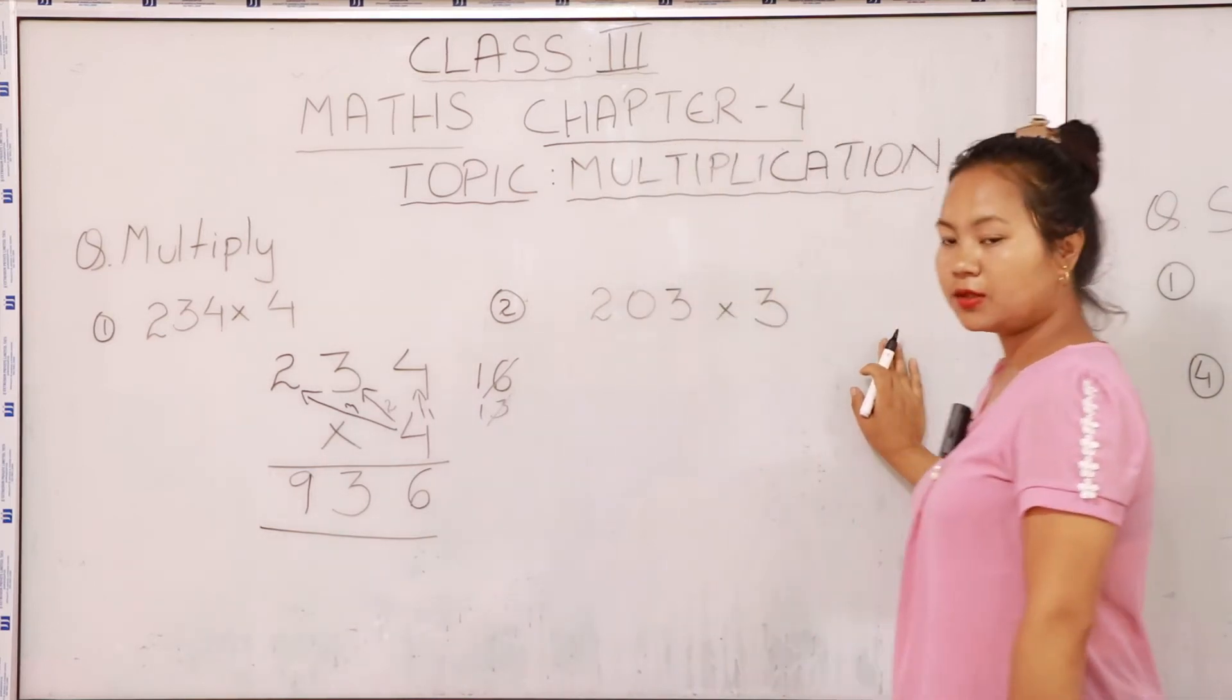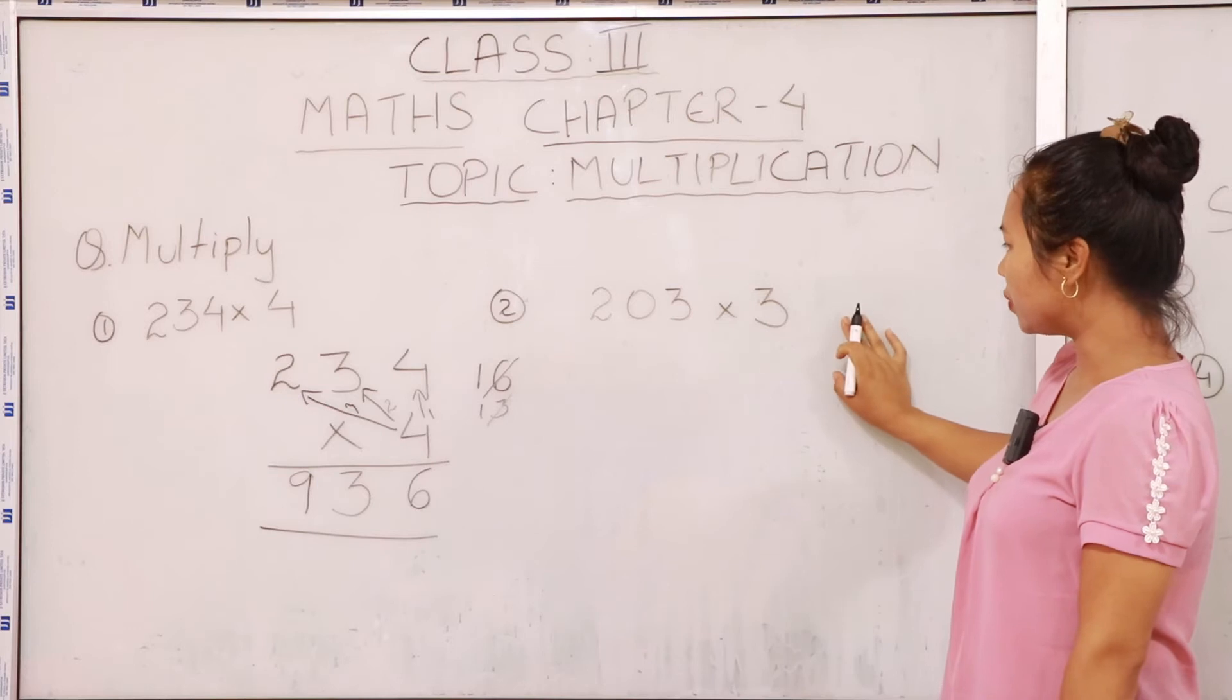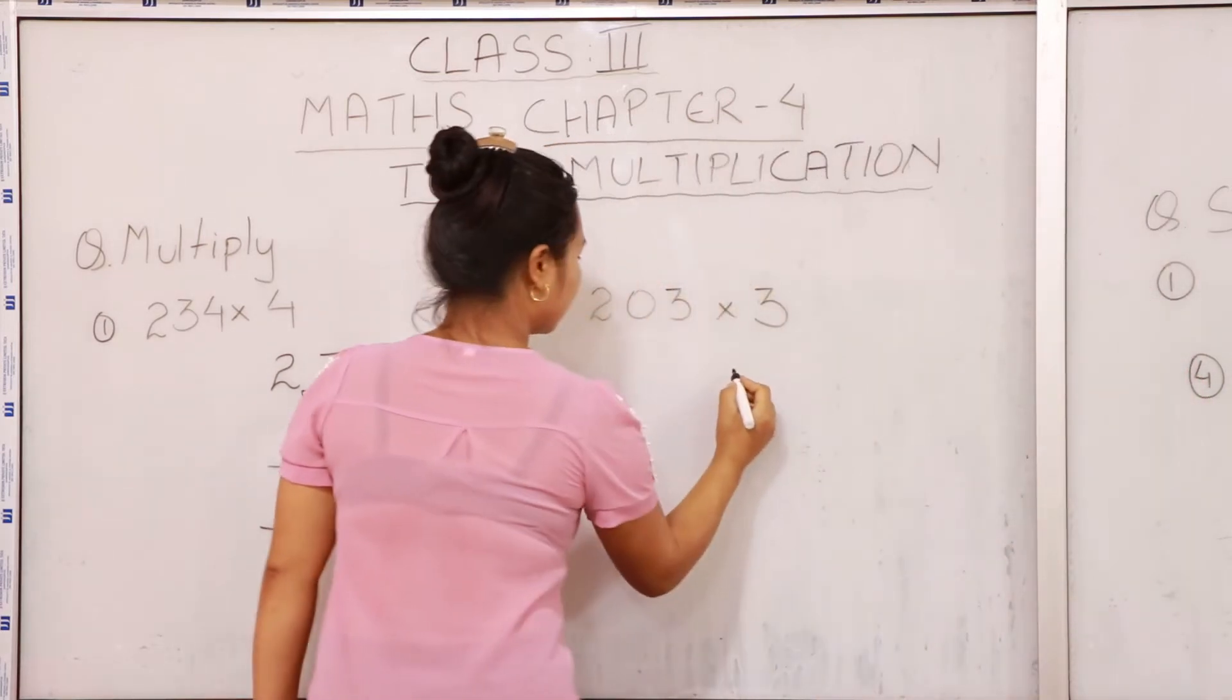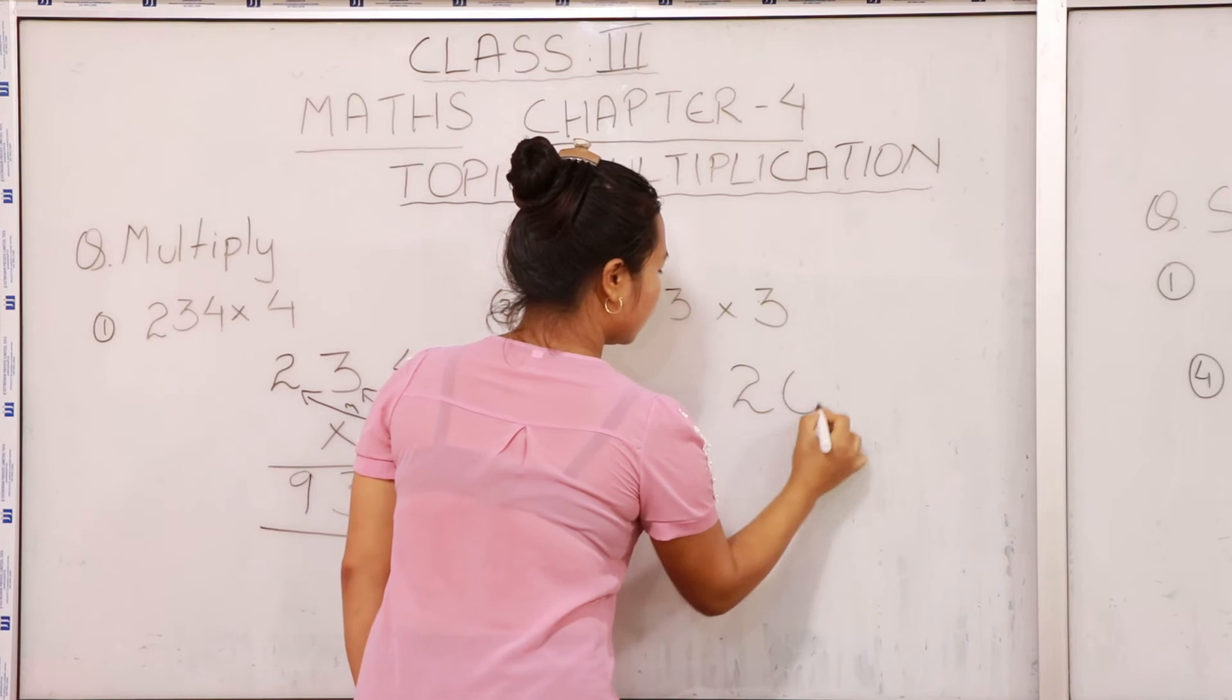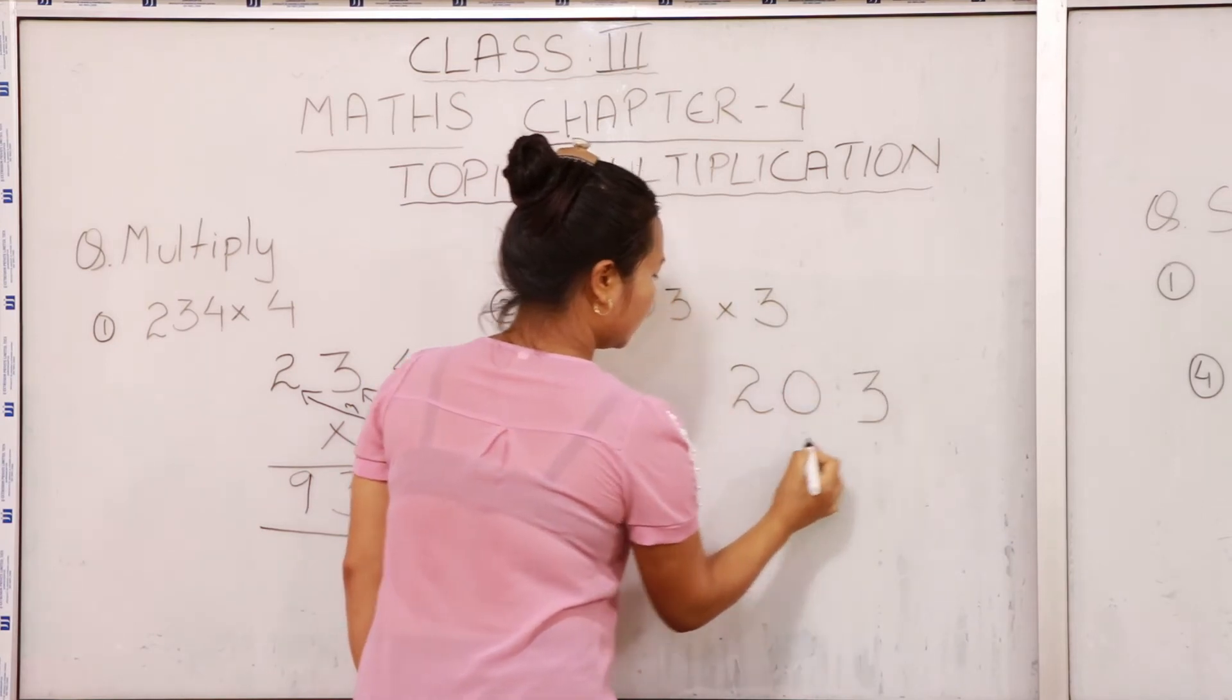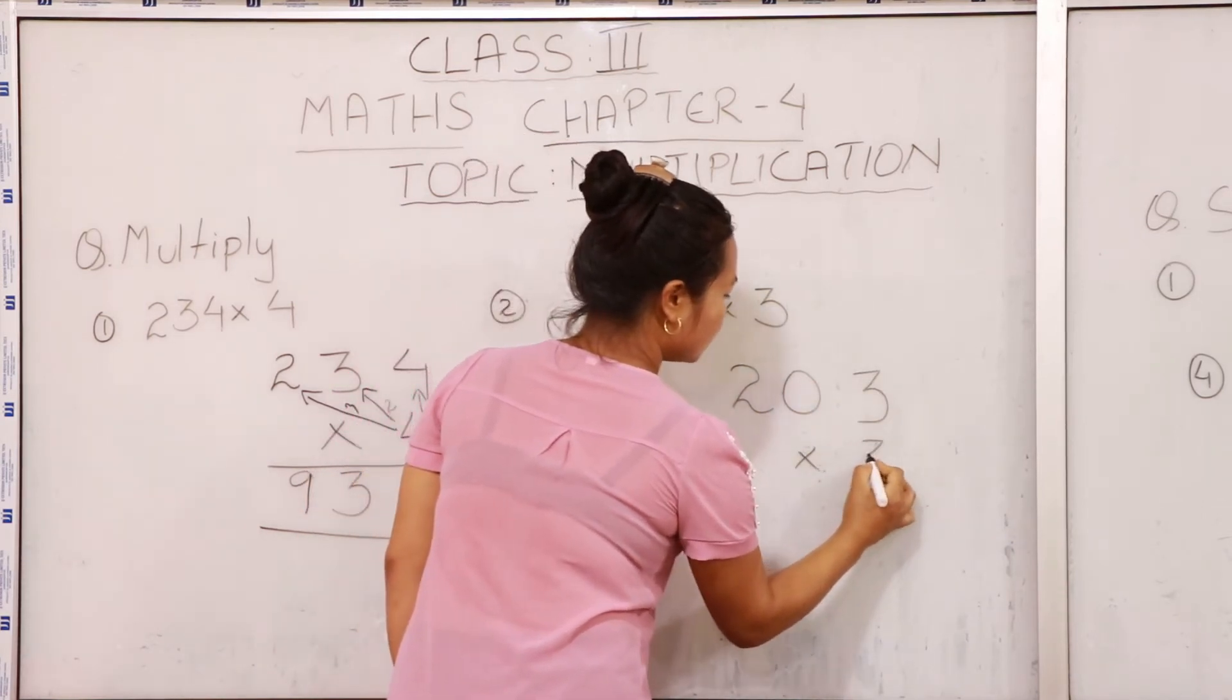Now let's solve the number 2 example, that is 203 multiplied by 3.